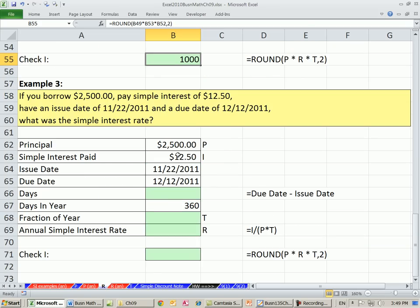Example number three. If you borrow $2,500, pay simple interest of $12.50, have an issue date of 11/22/2011 and a due date of 12/12/2011, what was the simple interest rate? So the bit of information we're not given, we're given principal and interest paid, we don't have the term, but no problem.